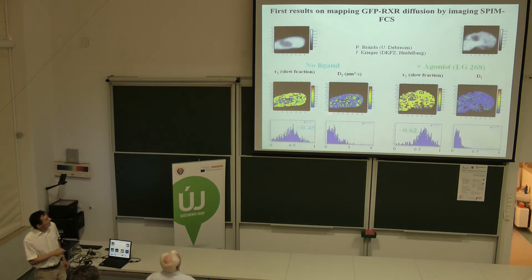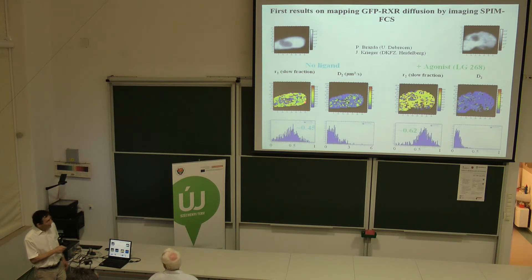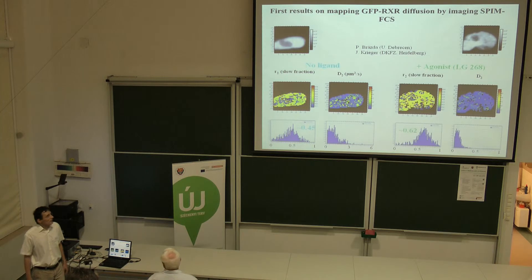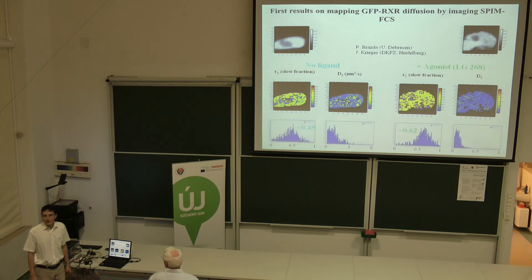That can give you such a correlation map. Here you see a diffusion coefficient distribution in a cell labeled with a transcription factor, and this shows the presence of a slow component. In principle, you can make distinctions within a cell or within an organ level, and if you are lucky, you can change the scope.